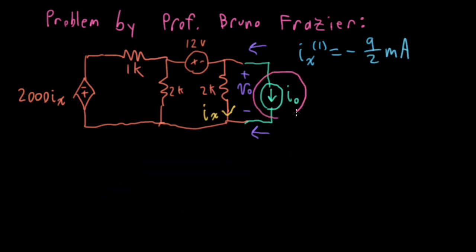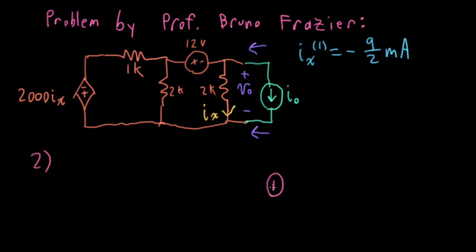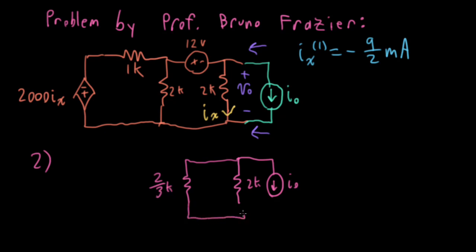Next, I'd like to focus on the artificial current load that we added. When I deactivate the other sources, I'm going to short out the 12-volt source and also short out the controlled source. For that case, I have my current source, 2K, and then 2K in parallel with 1K, which we figured out was two-thirds K. I need to figure out the current that's flowing down the 2K branch.